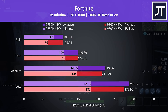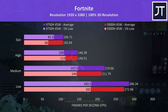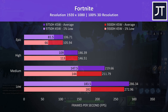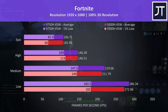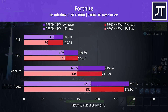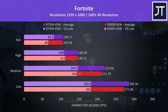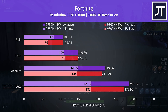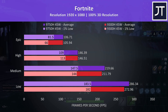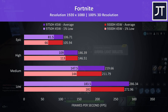Fortnite was tested using the replay feature, with different replay files but running through the same part of the game on both laptops. The average FPS at high and epic is about the same regardless of CPU, but the 1% low results are a bit strange. The two chips are similar in 1% low performance in all but epic settings, where the i7 saw a large 23% improvement.